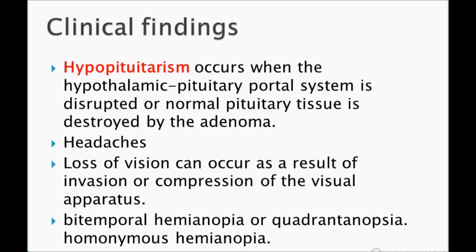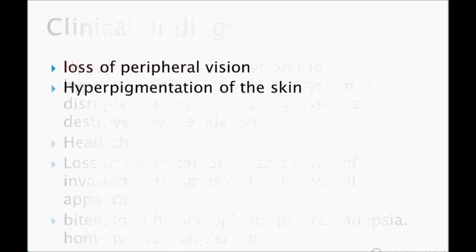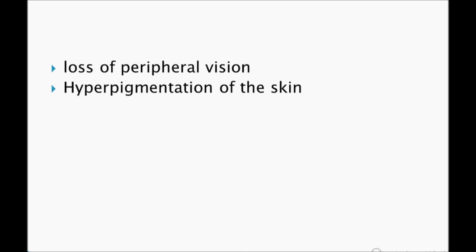Loss of vision is very important. Bitemporal hemianopia or homonymous hemianopia — very important points. Loss of peripheral vision: sometimes the patient will come after an operation to the emergency room with a car accident, hitting a car with a pole because they cannot see the peripheral region. They don't have peripheral vision — that's why they hit the pole and got injured.